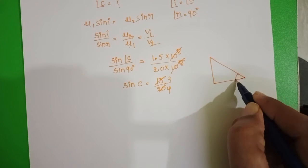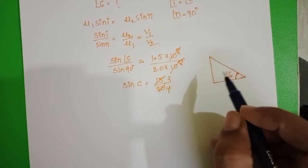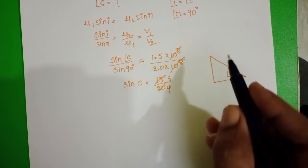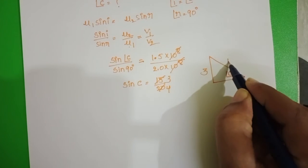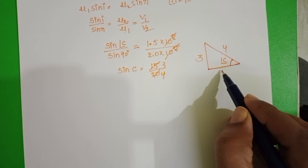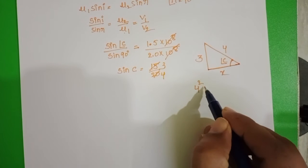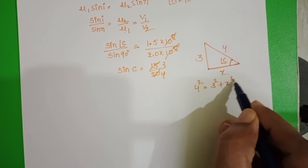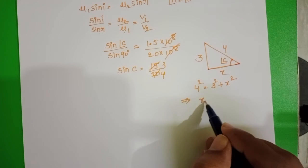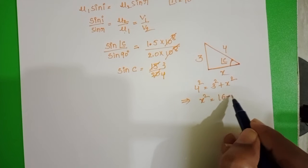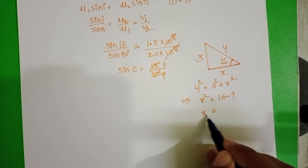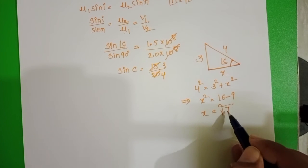Take a right angle triangle. This angle is critical angle. Sin c equals 3 by 4. Adjacent side let it be x. Hypotenuse square equals side square plus side square. From this, x square equals 16 minus 9, and x equals root 7.